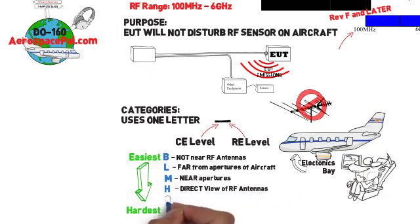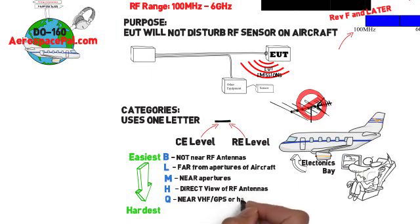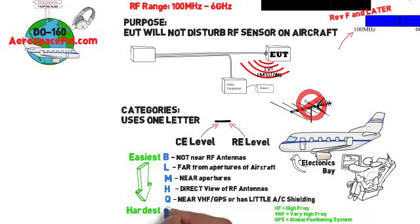Q: Equipment and associated wiring that may be near VHF or GPS radio receiver antennas or has little aircraft structure shielding. And finally, P: Equipment and associated wiring near HF, VHF or GPS radio receiver antennas.